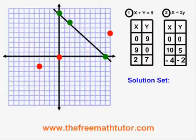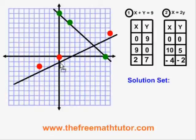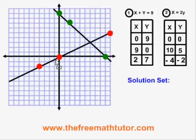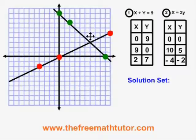Putting this line on the graph, it looks like this. The final step is to give the solution set. The solution set for a system of two equations and two variables is the point where the lines cross on the graph. I can read this answer from my graph — I see that these two lines are crossing at the point (6, 3). So my solution set is (6, 3).